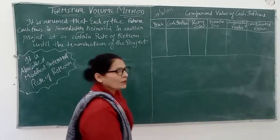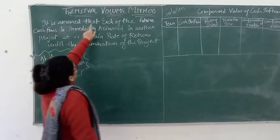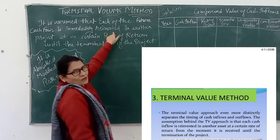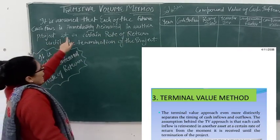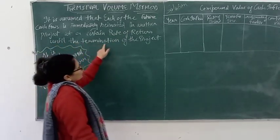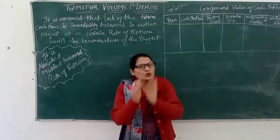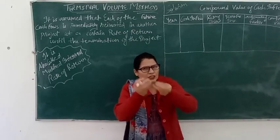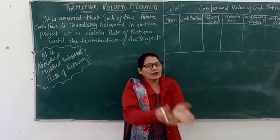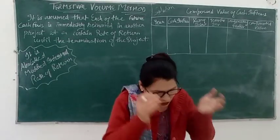Today we will see the terminal value method, which says and assumes that each of the future cash flows is immediately reinvested in another project at a certain rate of return until the termination of the project. In other words, terminal value method assumes that whatever cash inflow we receive is reinvested in another project, and the outflows are compounded rather than discounted.